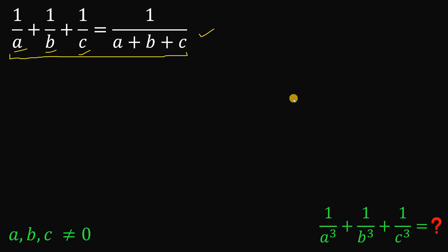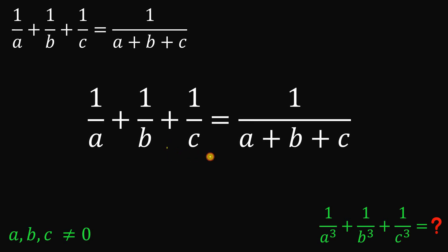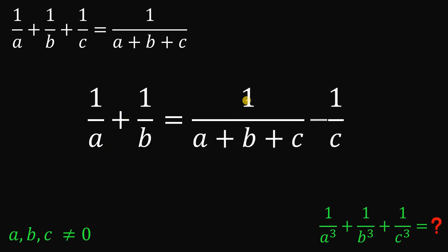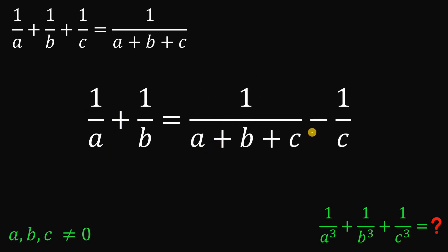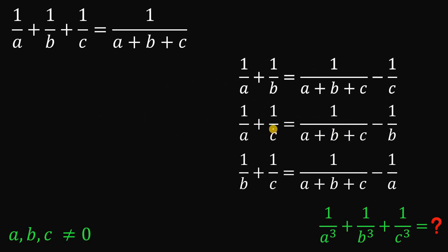So now let's get our equation. What we're going to do is subtract 1 over C on both sides. If we do that, we get 1 over A plus 1 over B equals 1 over A plus B plus C minus 1 over C. Doing this step, we created 3 possible cases: the first when subtracting 1 over C, the second when subtracting 1 over B, and the third when subtracting 1 over A on both sides.